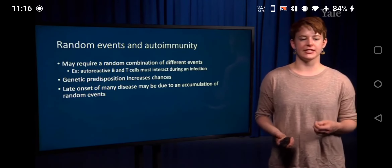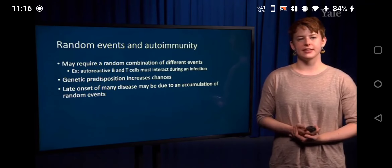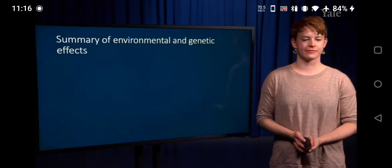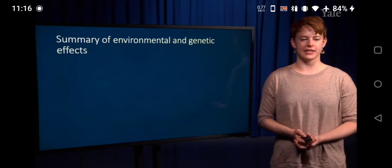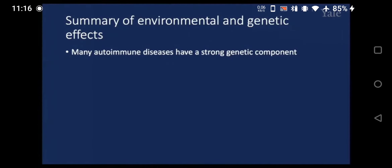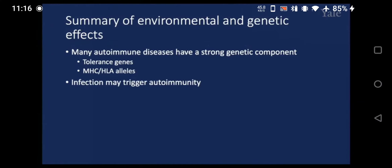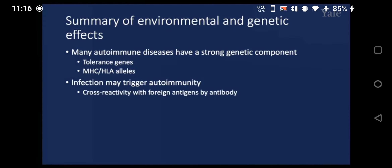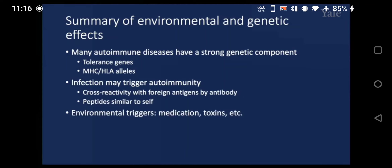To summarize the environmental and genetic factors: many autoimmune diseases have a strong genetic component, particularly with tolerance genes and MHC alleles. Infection can also trigger autoimmunity, particularly through molecular mimicry and cross-reactivity by antibodies, and through similar peptides being presented to T-cells. Environmental triggers such as medications or toxins can cause autoimmunity, and it's possible that random events may also lead to the development of autoimmunity.